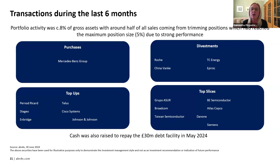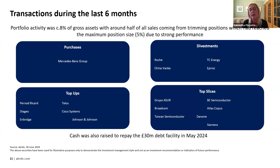China Vanke is one that we got wrong. It's a Chinese real estate company, and we went into this one with our eyes open — it was a small position. We thought by going into one of the higher quality names in that sector, there would have been more of a solution in terms of Chinese property and this would have been a company that was part of that solution. But it has taken a lot longer and it's still not resolved. The catalyst for selling was when the company cancelled its dividend — the one stock we owned that cancelled its dividend this year.